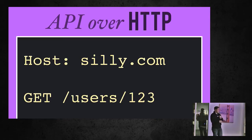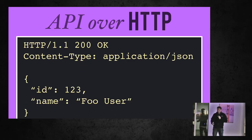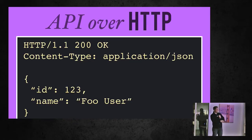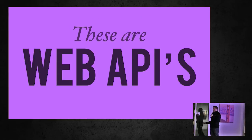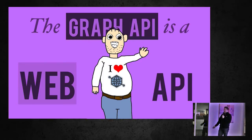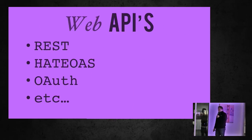APIs can also exist over the HTTP protocol. For example, you make a GET request to silly.com, requesting a specific endpoint — a user with ID 123. That returns a 200 OK response with a JSON representation of that user node. These are called web APIs. The Graph API is a web API. When working with APIs, you may have heard of terms like REST, HATEOAS, and OAuth. The Graph API is not RESTful, but it does use OAuth 2.0.